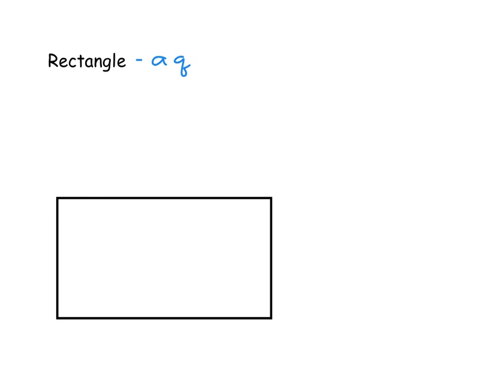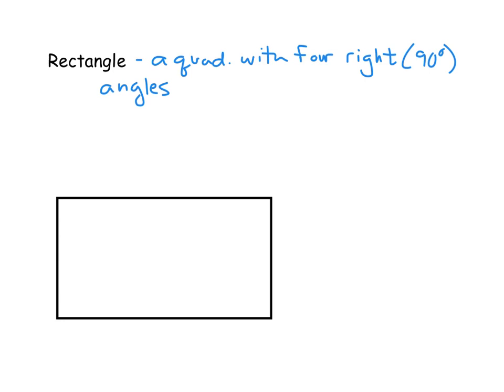The next type of special quadrilateral is the rectangle. A rectangle is just a quadrilateral with four right, or 90-degree, angles. To mark that for the quadrilateral here, we just have to put in four 90-degree angle markings — the little right-angle corner marks. Another vocabulary word from studying polygons is 'equiangular,' and a rectangle is an equiangular quadrilateral, meaning every angle is congruent. It certainly is equiangular because it has four congruent 90-degree angles.